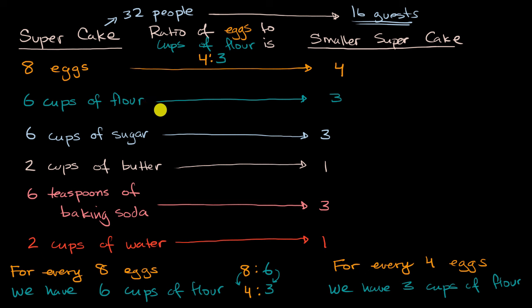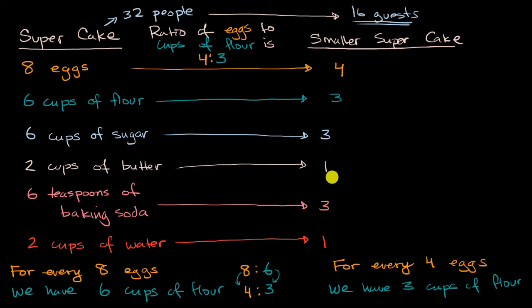And so this is why ratios are helpful. This recipe has a different number of eggs, a different number of cups of flour, a different number of cups of sugar, but the ratios between the ingredients are the same. And so you will be able to have a cake that tastes the same — that essentially is the same cake — but just is a different size.